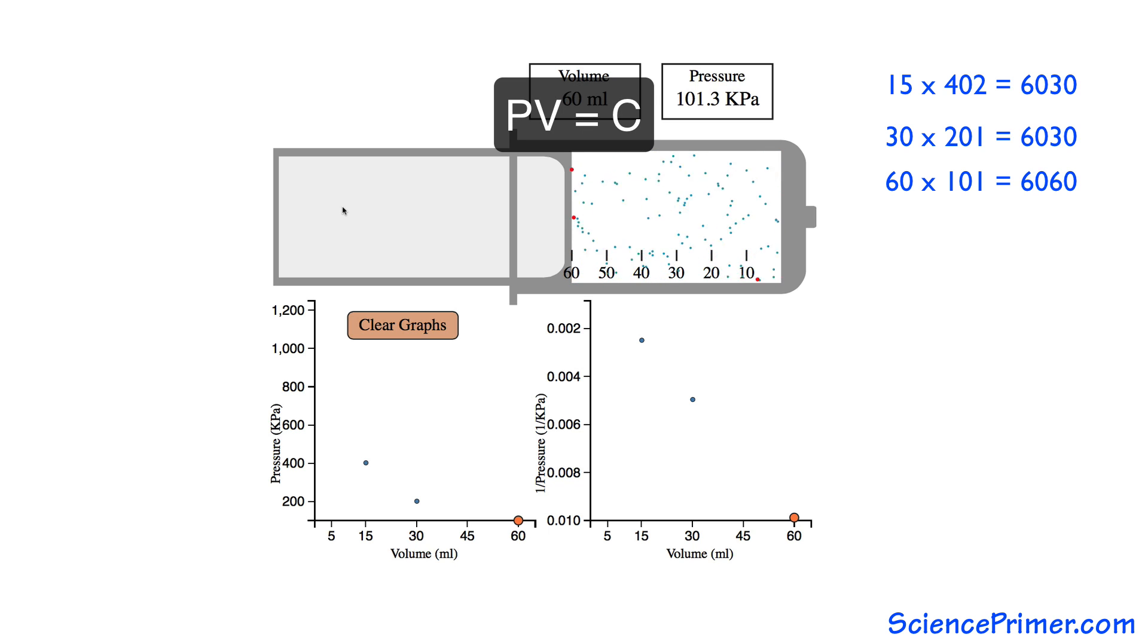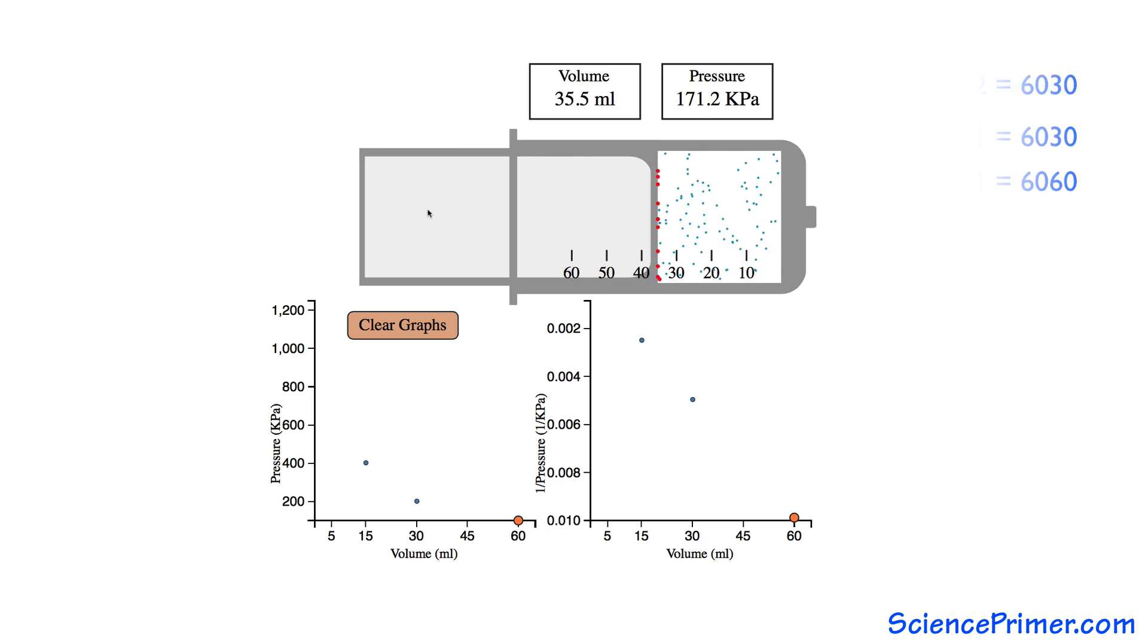The relationship between pressure and volume results from the influence volume has on the rate at which gas molecules collide with the container walls. If the volume decreases, the molecules encounter the container walls more often. This is true even though the speed, that is the temperature, of the individual molecules has not changed. An increased number of collisions equates to a higher pressure. Conversely, if volume increases, the rate of collisions and therefore the pressure decreases.